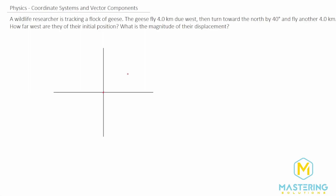Welcome to Mastering Solutions. In this vector problem, they tell us that a wildlife researcher is tracking a flock of geese. The geese fly 4 kilometers due west. We'll say they start right here at the origin and fly 4 kilometers due west — so that's 4 km.